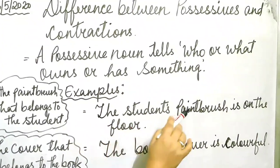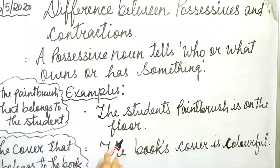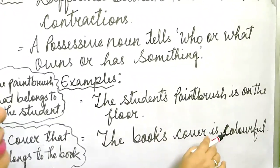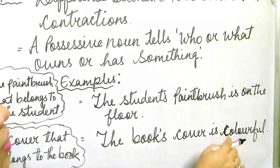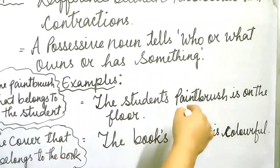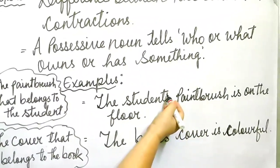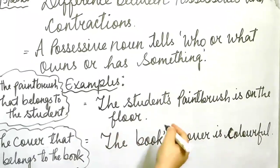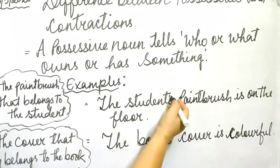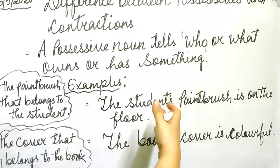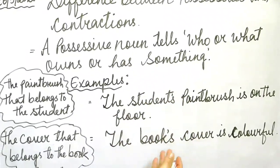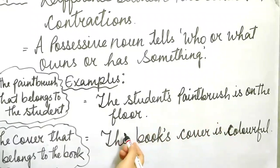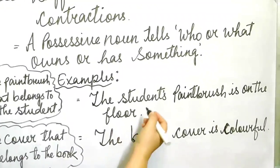The student's paintbrush is on the floor. Next: The book's cover is colorful. Why am I showing you the difference, children? Because here also we put an apostrophe, and in contractions also we remove a letter and put an apostrophe. So what is the difference between these two? That I will explain you.